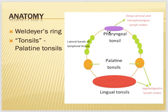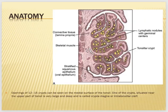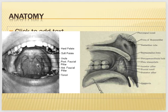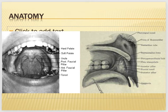The tonsils have anterior and posterior pillars, two surfaces — the medial one and the lateral one — and two poles: the upper pole and the lower pole. They have 12 to 15 crypts, and one of the crypts which is in the middle, the deep one, is called the crypt magna. When you open the mouth you can see the tonsils and the two pillars — the palatoglossal and palatopharyngeal arches.